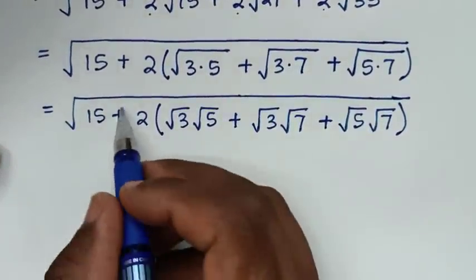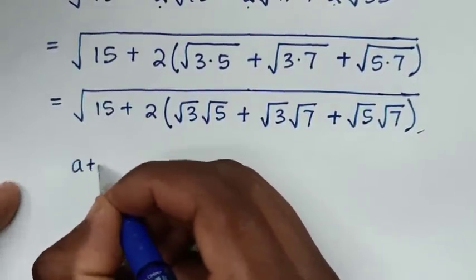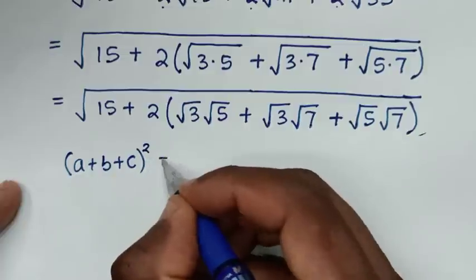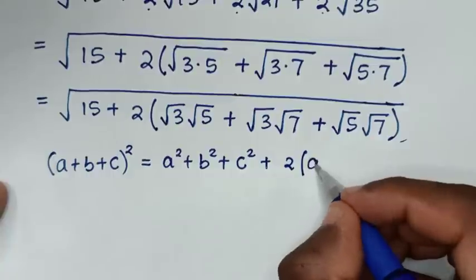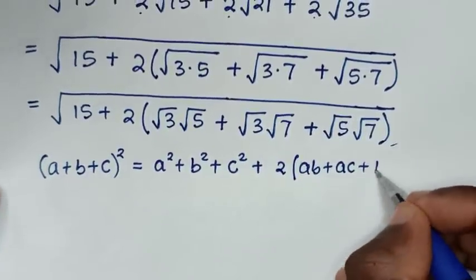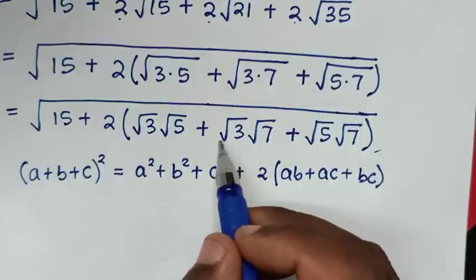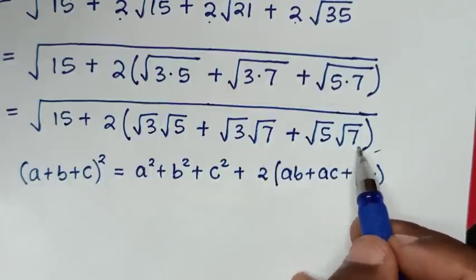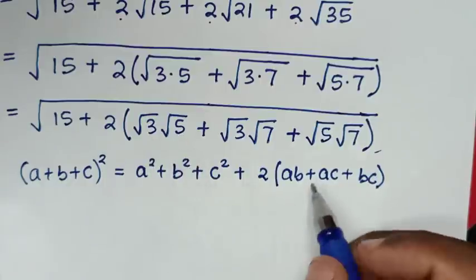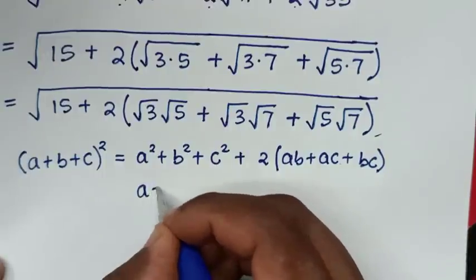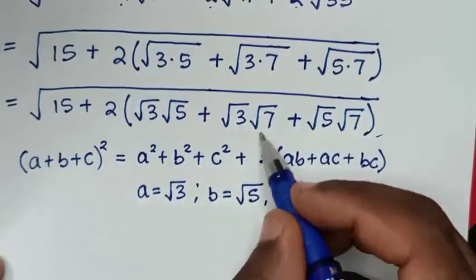From this expression under the square root, we apply the algebraic rule: (a + b + c)² equals a² plus b² plus c², plus 2 times (ab + ac + bc). Comparing, we see that 2 times (√3·√5 + √3·√7 + √5·√7) matches the 2(ab + ac + bc) part, so a equals square root of 3, b equals square root of 5, and c equals square root of 7.